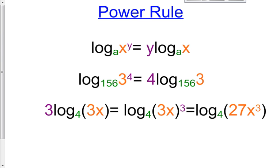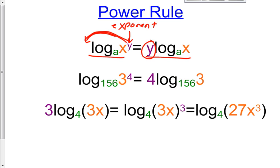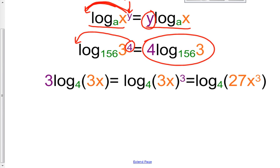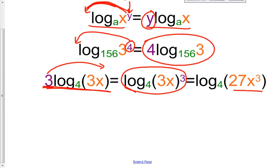The last property is the power rule. If Y is an exponent in log base A of X to the Y, one of the rules with logs is that you can bring it out in front as a coefficient: Y · log base A of X. For example, this 4 is an exponent, so bringing it to the front gives 4 · log base 156 of 3. Conversely, if 3 is a coefficient, you can bring it up as an exponent: log base 4 of (3X)³ equals 3 · log base 4 of 3X, and (3X)³ = 27X³.